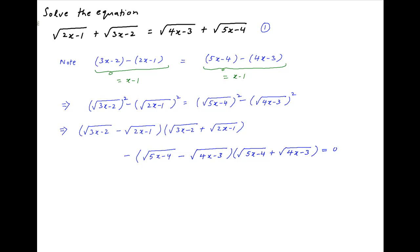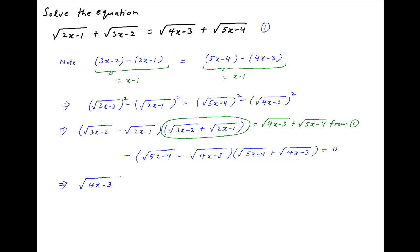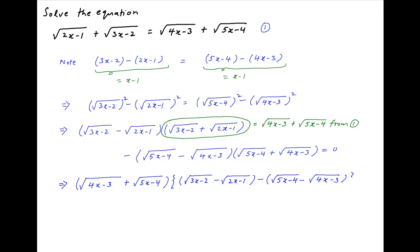Now, from equation 1, √(3x-2) + √(2x-1) = √(4x-3) + √(5x-4). Substituting this into the factored equation, we get [√(4x-3) + √(5x-4)] · [√(3x-2) - √(2x-1)] - [√(5x-4) - √(4x-3)] · [√(5x-4) + √(4x-3)] = 0.